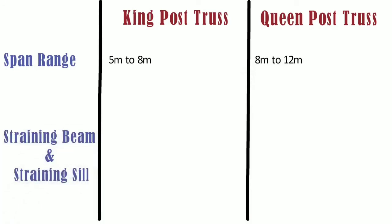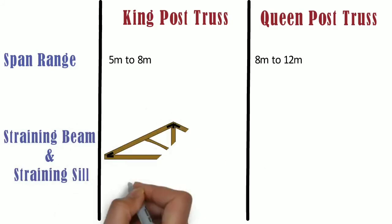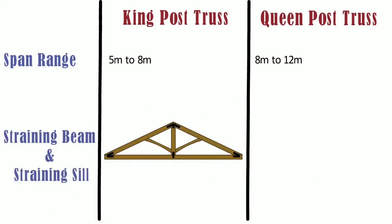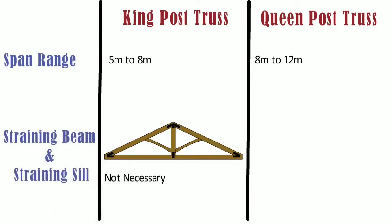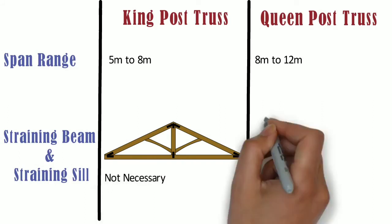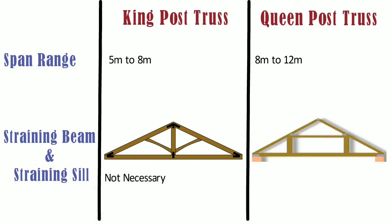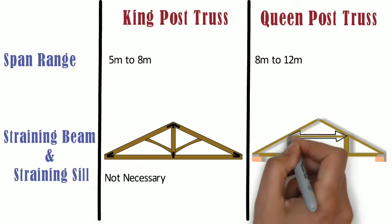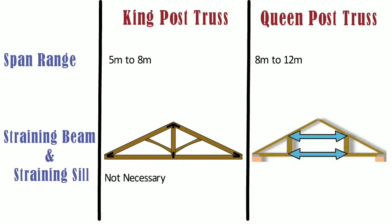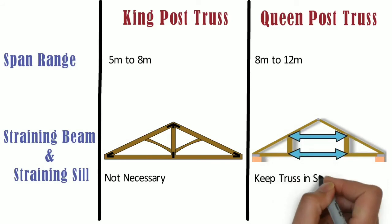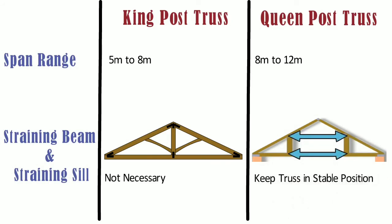Straining beam and straining sill. In case of king post truss, straining beam and straining sill are not necessary. Whereas, in case of queen post truss, straining beam and straining sill are used to keep the queen post in a stable position.